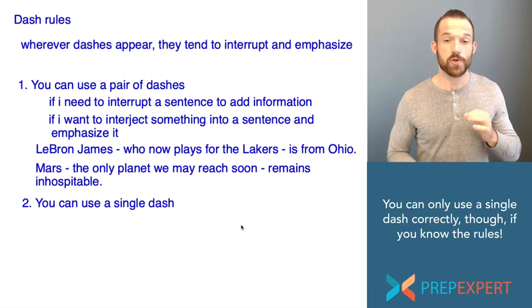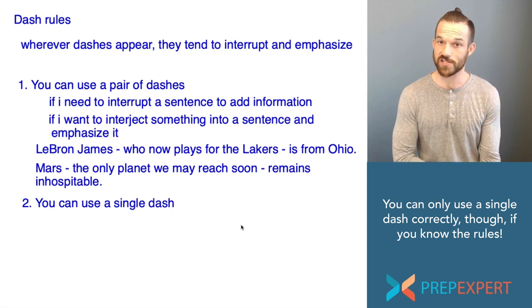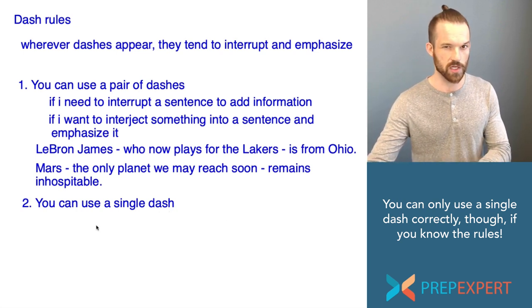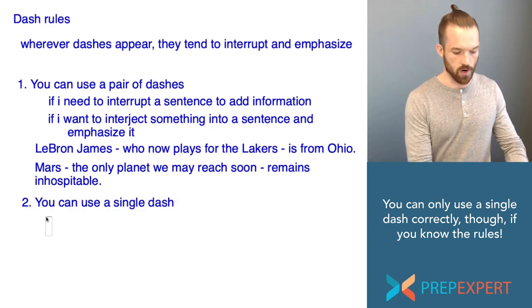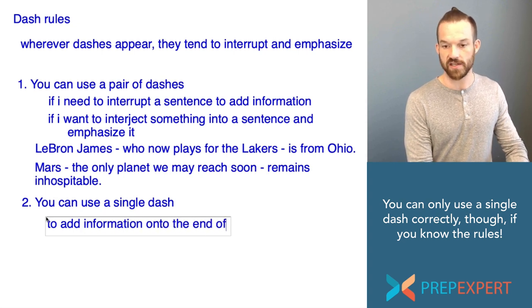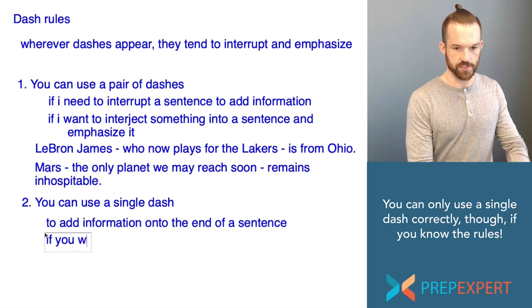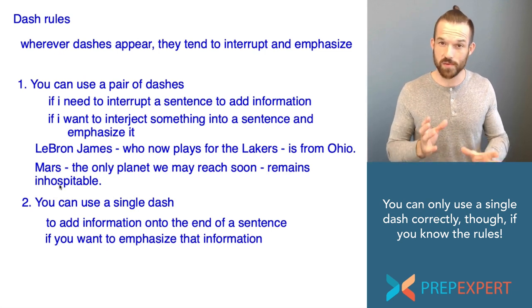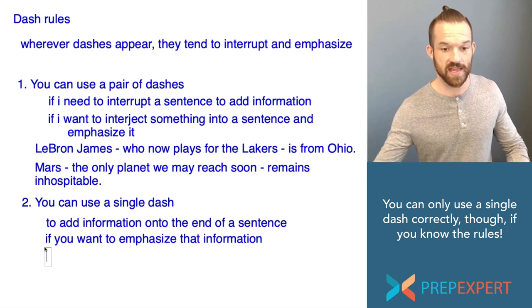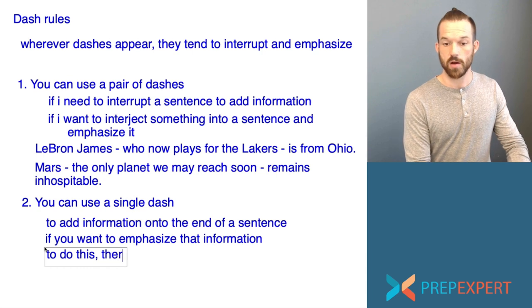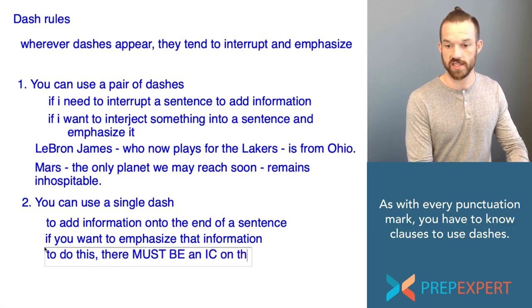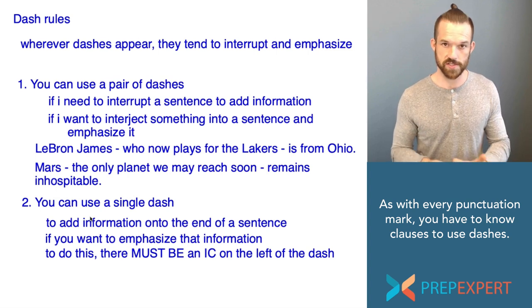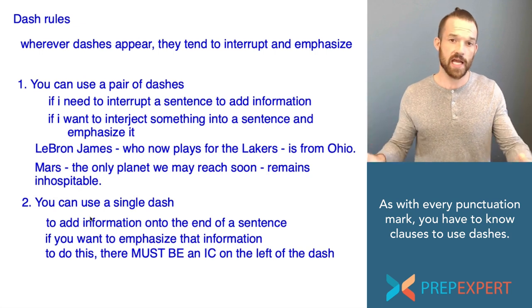Now let's talk about using a single dash. A lot of students think that if they ever see a single dash it's automatically wrong, but that's not the case. In order to use a single dash, it must be the case that you are adding information onto the end of a sentence and want to emphasize that information. There must be an independent clause on the left side of the dash — what's on the left side must be able to stand on its own as a sentence. Then you can throw in a single dash and add some emphasized information on the end.